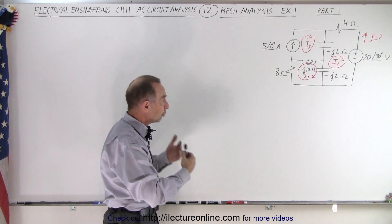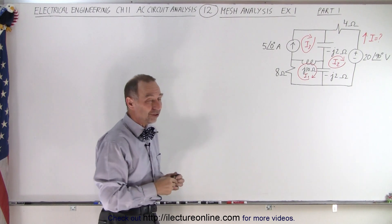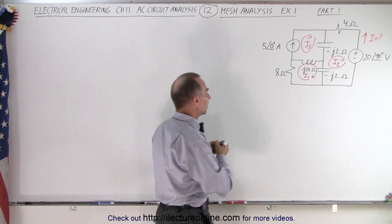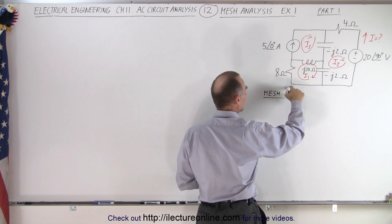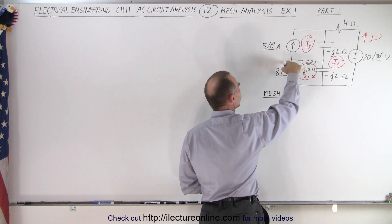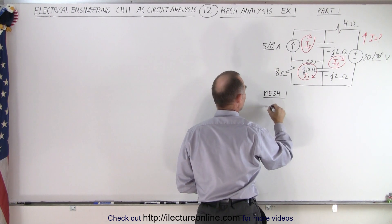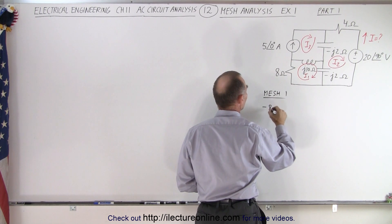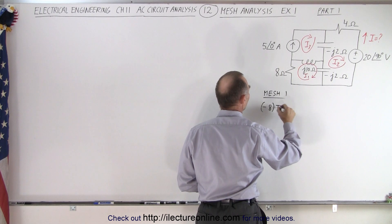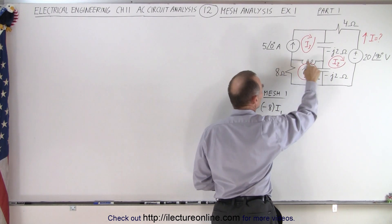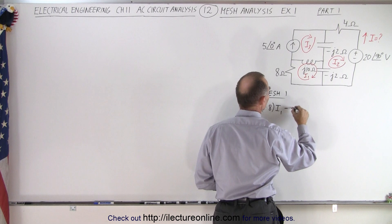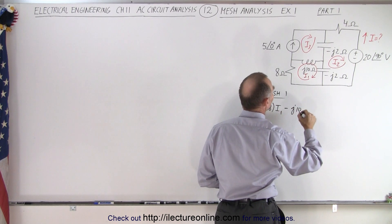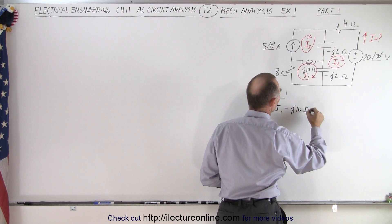Well, we add up all the voltage rises and drops in each of the meshes, and then solve the equations simultaneously. Starting with mesh 1, start at the bottom left corner. We have a voltage drop across the resistor, so it's minus 8 multiplied times I1. We have a voltage drop across the inductor, so that would be minus J10 multiplied times I1.